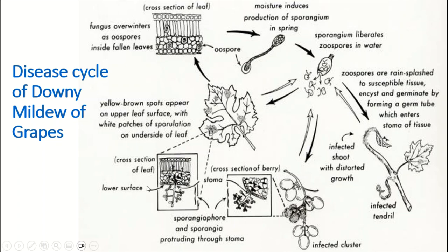On the lower surface of the leaf, there is a fibrous, oosporic mass. Yellow-brown spots appear on the upper surface of the leaf, however on the lower surface of the leaf, white or grey patches appear, which represents spore formation on the underside of the leaf.